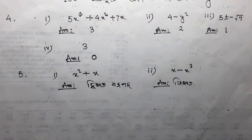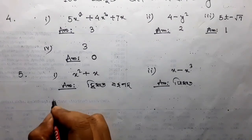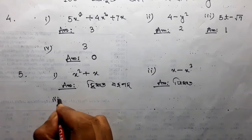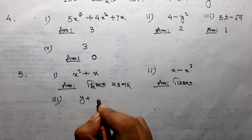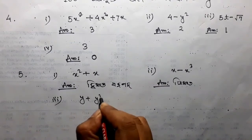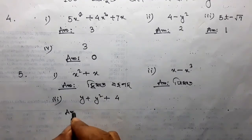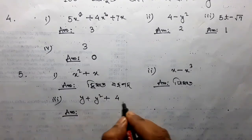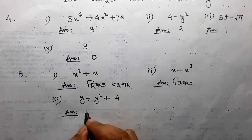Next number 3: y squared plus 4, because this is a matter of 2, so this is dghat.